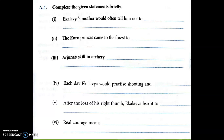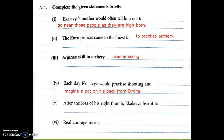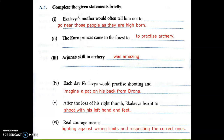Question A4: Complete the given statements briefly. One: Eklavya's mother would often tell him not to go near those people as they are high bond. Two: The Kuru princes came to the forest to practice archery. Three: Arjuna's skill in archery was amazing. Four: Each day Eklavya would practice shooting and imagine a pat on his back from Drona. Five: After the loss of his right thumb, Eklavya learned to shoot with his left hand and feet. Six: Real courage means fighting against wrong limits and respecting the correct ones.